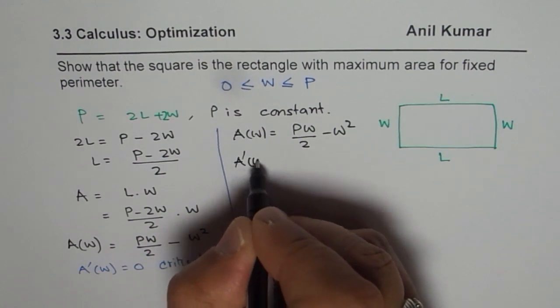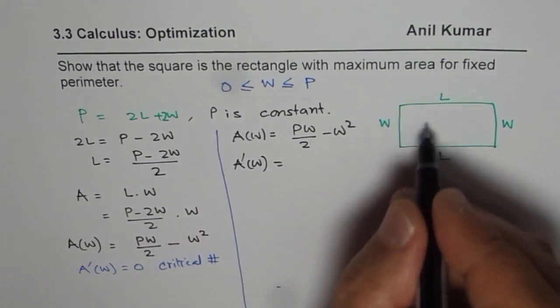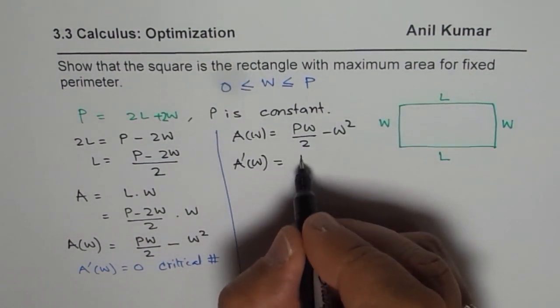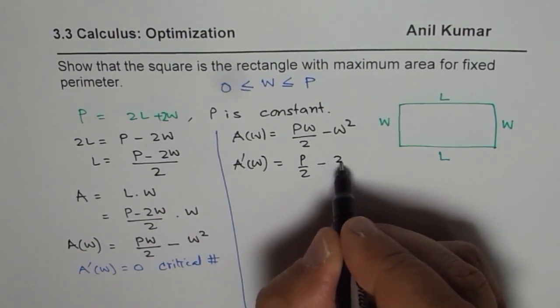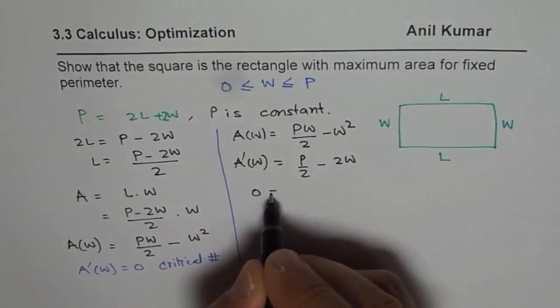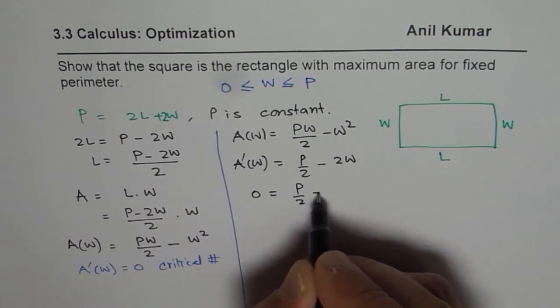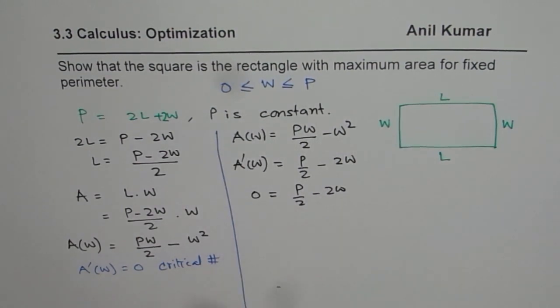So A dash, rate of change of area with width, will be P over 2 minus 2W. And this is 0, that means P over 2 minus 2W should be equal to 0.